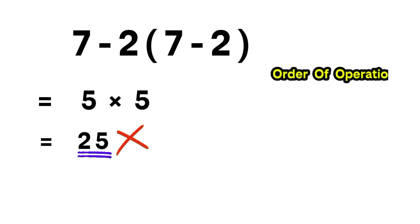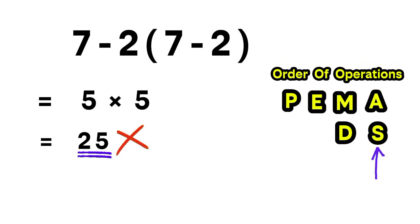Remember, the order of operations tells us to handle parenthesis first, then exponents, then multiplication or division, and finally addition or subtraction. Multiplication and division share the same level of priority, so we work from left to right. The same idea applies to addition and subtraction as well.